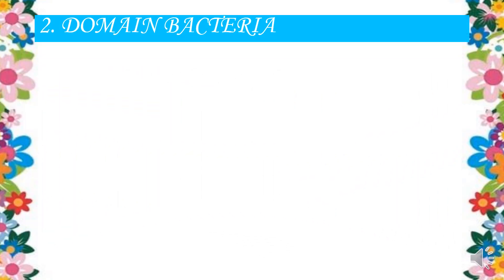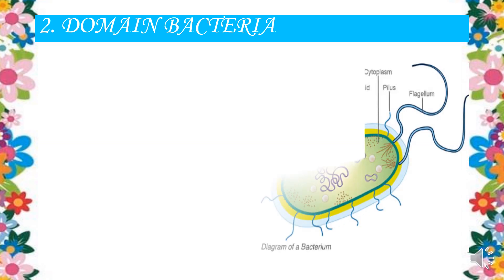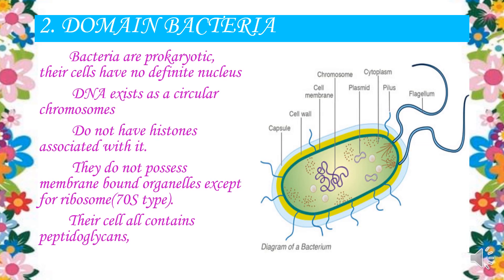The next domain is Domain Bacteria. Bacteria are prokaryotic organisms whose cells have no definite nucleus. The DNA exists as a circular chromosome with no histone proteins associated with it. They do not possess membrane-bound organelles — no double membrane organelles — except for ribosomes. Their cell walls contain peptidoglycans.